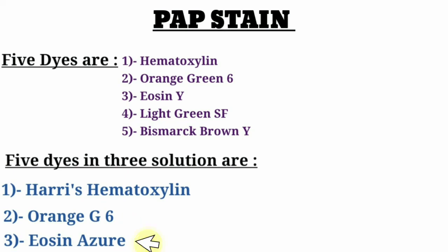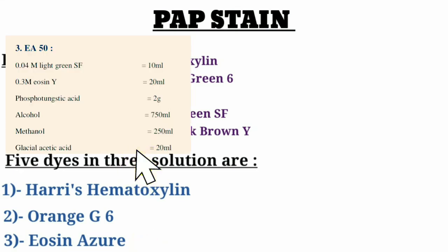The third solution is Eosin Azure, which is a secondary counter stain. It contains a mixture of Eosin Y, Light Green SF, and Bismarck brown. The most commonly used is EA50; the second example is EA31. To prepare EA50: Light Green SF 0.04g in 10ml, Eosin Y 0.3g in 20ml, phosphotungstic acid 2g, alcohol 750ml, methanol 250ml, and glacial acetic acid 20ml.